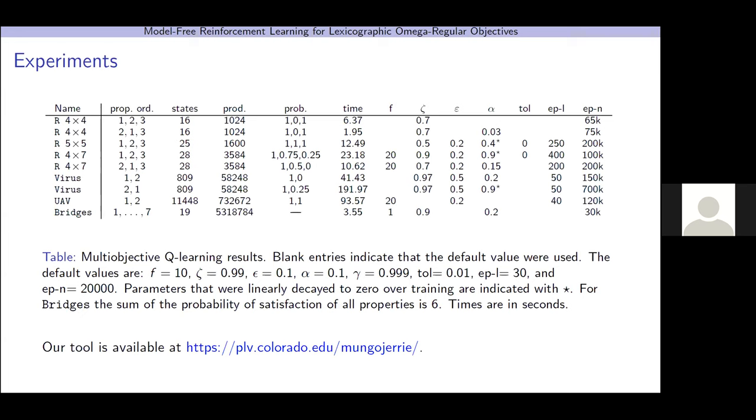So, we implemented this in our tool, MungoJerry, which is available at github.colorado.edu/MungoJerry. And note that all of our hyperparameters are relatively small. The largest f we needed in our examples were 20, and the largest zeta we needed was 0.99.